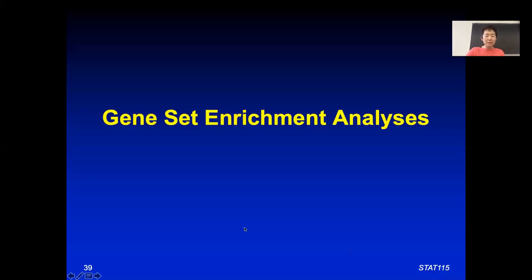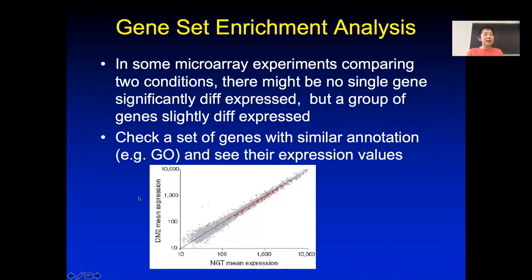Next, we'll talk about gene-set enrichment analysis. This was motivated by a published study where two labs did a microarray experiment on the exact same condition. When they looked at the genes that are differentially expressed, each only had a very small number of genes that were different. But when you look at the overlap, they had zero overlap — nothing is significant. So you wonder: did they do the experiment right, or maybe one is garbage, or maybe both are.